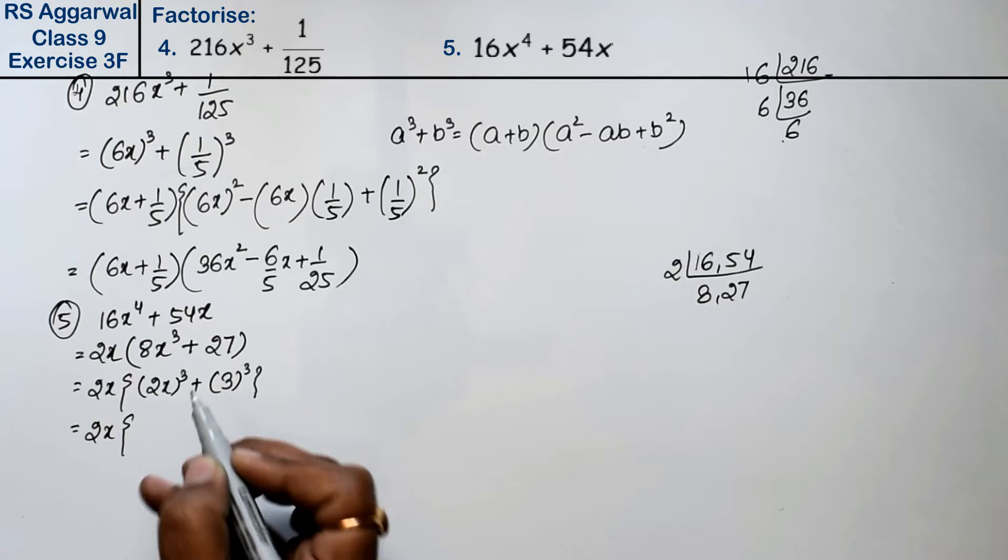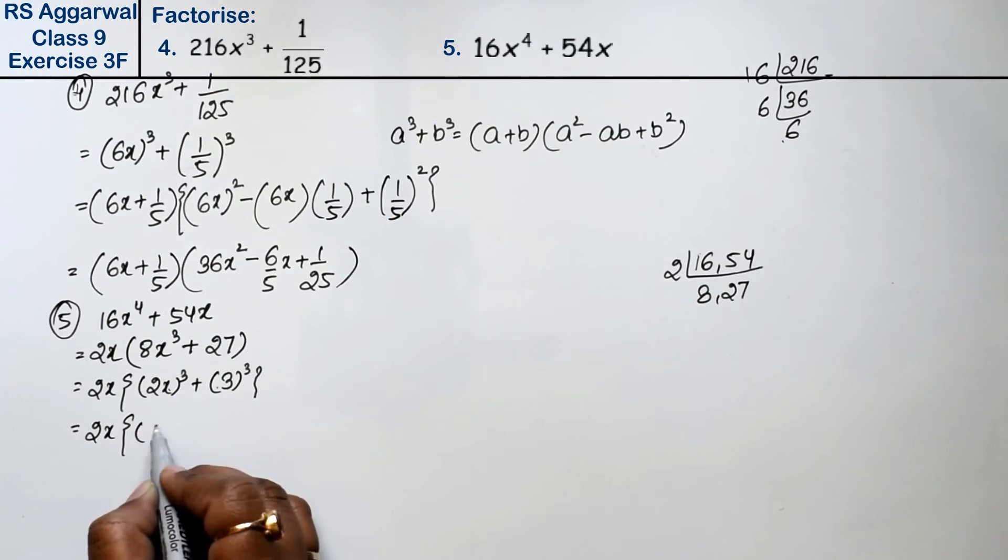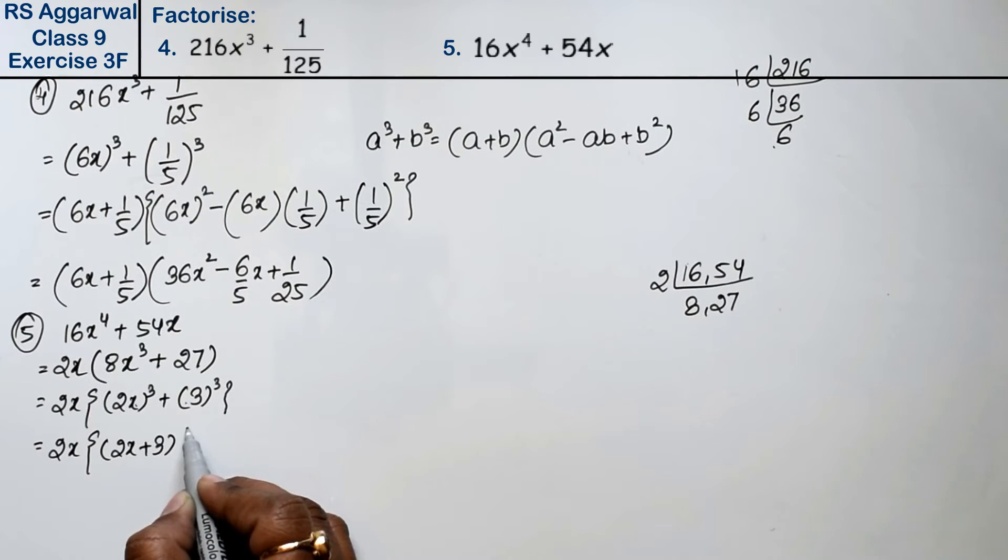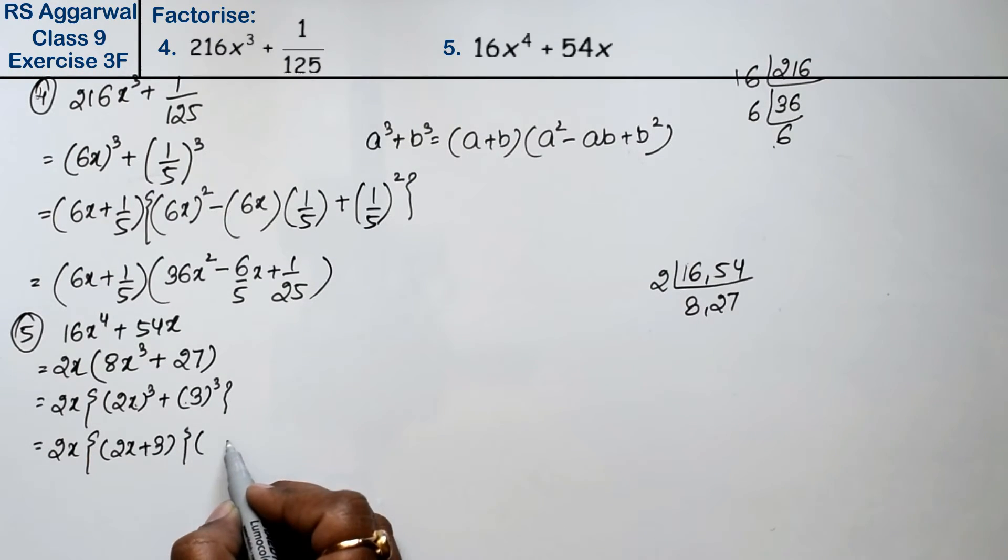a cube plus b cube formula is a plus b. So 2x times 2x plus 3 times a square.